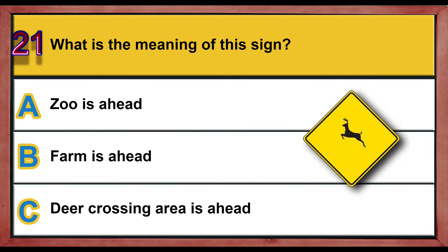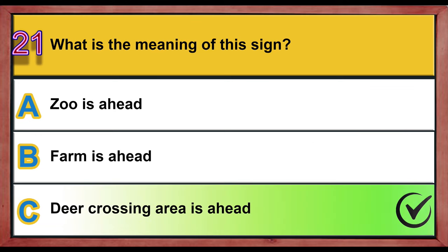Question 21. What is the meaning of this sign? A. Zoo is ahead. B. Farm is ahead. C. Deer crossing area is ahead. Correct answer is C: Deer crossing area is ahead.